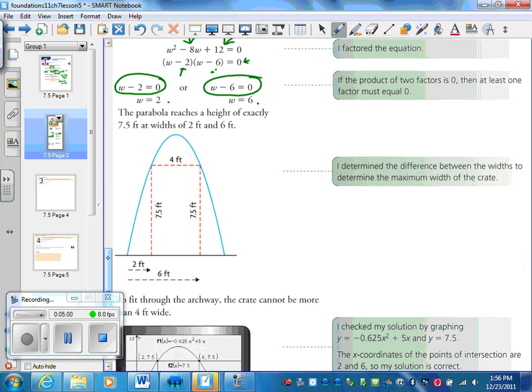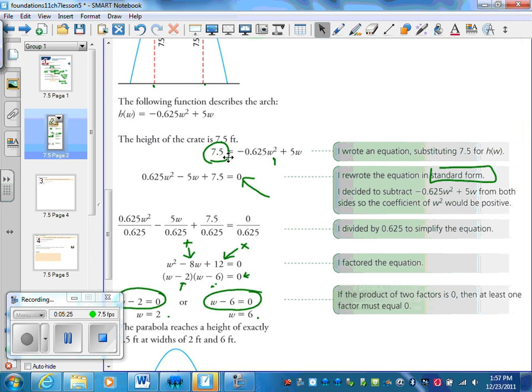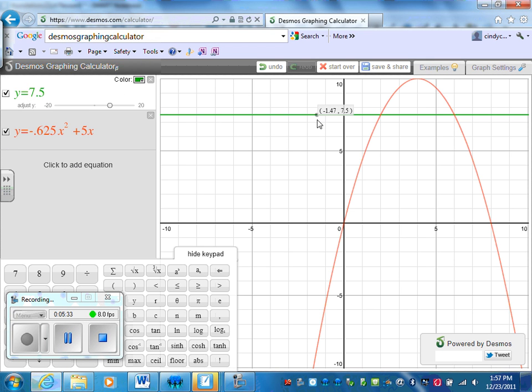So we're simply solving these. And she said that the parabola reaches a height of exactly 7.5 feet at widths of 2 and 6. Now what she did is she just said, you know, I'm still learning this stuff, I'm not quite confident, I'm going to actually try graphing these. So what she did is she took her equation right here, 7.5 feet equals negative 0.625w squared plus 5w. She went to her graphing calculator and she graphed it. So she said when y equals 7.5, and I made that a green line, and also when y equals negative 0.625w squared plus 5w, where those intersect are going to be my answers. You'll notice that it intersects when x equals 2 and again when x equals 6. So that verifies that the work we did is correct.